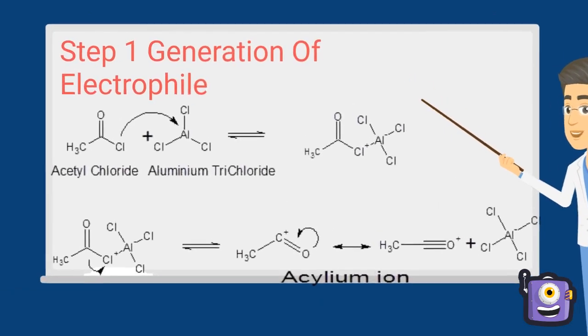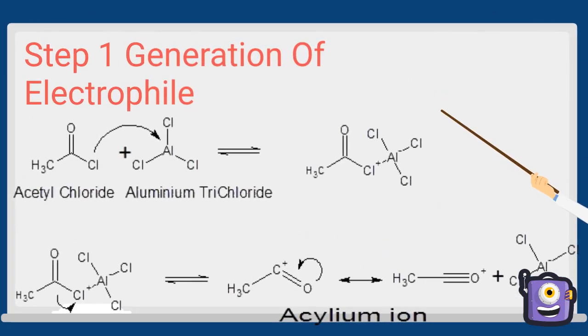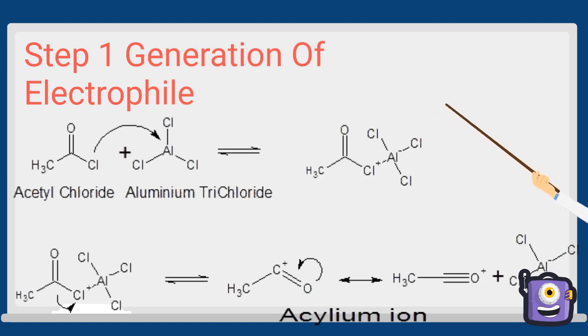Step number one: generation of electrophile. In the first step, the acetyl chloride is treated with aluminium trichloride to form an acylium ion, which acts as the electrophile.